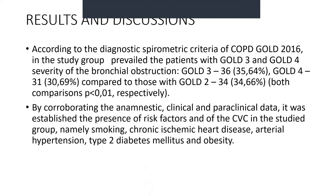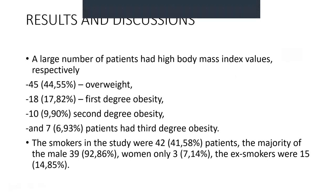By collaboration with anamnestic, clinical, and paraclinical data, the presence of risk factors and all cardiovascular comorbidities in the study group were established, namely smoking, chronic ischemic heart disease, arterial hypertension, type 2 diabetes mellitus, and obesity. A large number of patients had high body mass index values: 45 overweight, 80 first-degree obesity, 10 second-degree obesity, and 7 patients with high BMI.